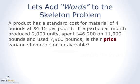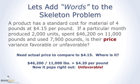Was the price variance favorable or unfavorable? We need the actual price to compare to the $4.15 standard. It's not directly given, but you know how much was spent on those 11,000 pounds, so you can solve for the cost per pound: $4.20. You can immediately see that we paid more than the standard — so that would be unfavorable.